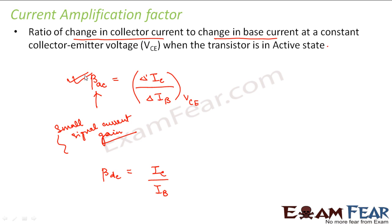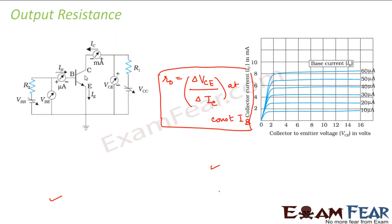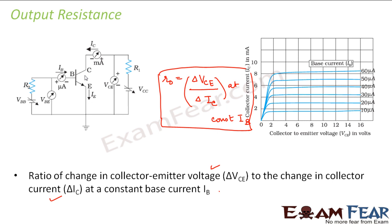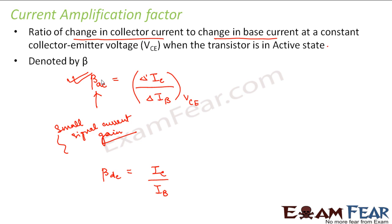One important thing regarding output resistance: the output resistance will increase when the base-collector junction is reverse biased. When a junction is forward biased, current flow is more and therefore resistance is less. So output resistance is higher when the base-collector junction is reverse biased, and lower when it is forward biased. The biasing of the junction, the current flow, and the resistance are all related to one another.